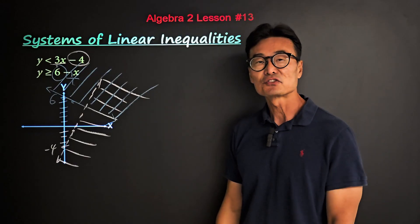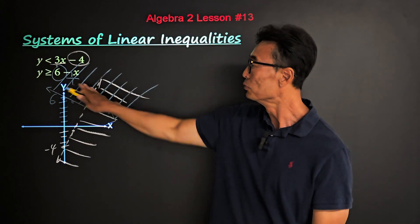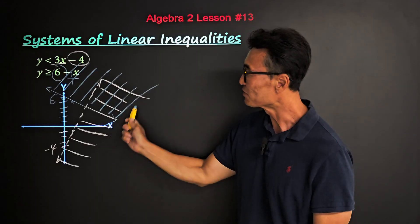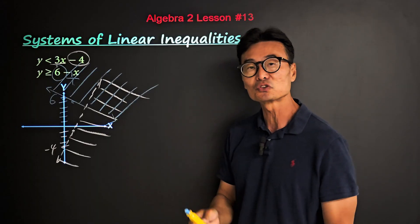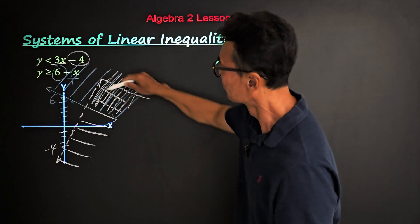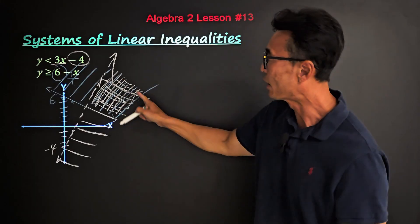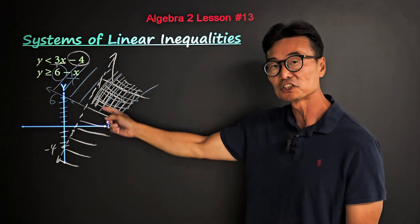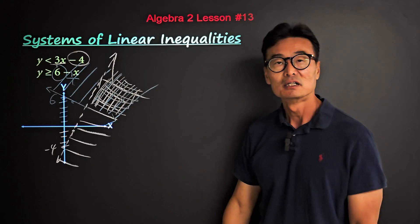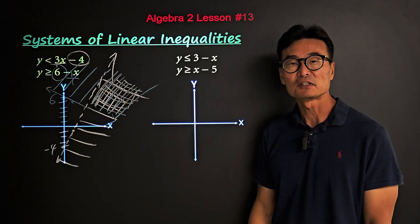Our final answer is going to be where the first inequality is shaded and where the second inequality is shaded — where they intersect, which is in this overlapping region. So our final answer is this shaded region below the first inequality and above the second inequality.